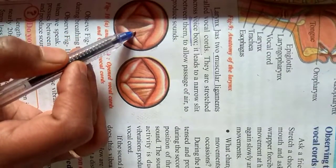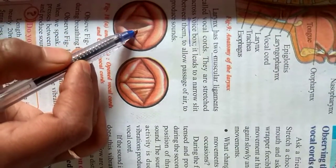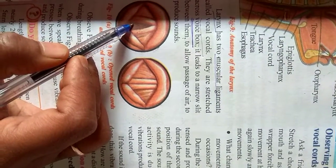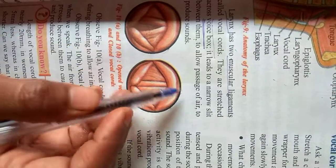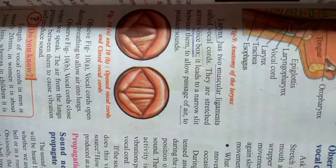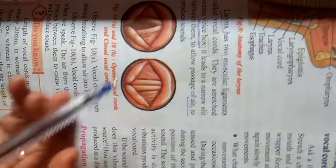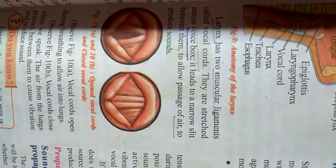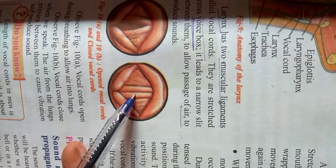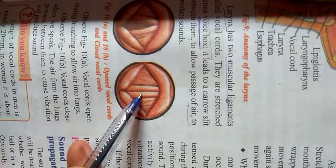These thread-like structures are the two vocal cords. If they are stretched, a small hole is created in between. From this, air enters inside. Due to air, vibrations are produced. Due to vibrations, our voice comes out. Sound comes out. And if they are not stretched, they are closed like this. No air enters, no sound comes.